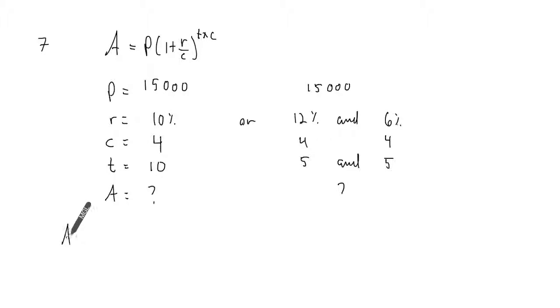For A here, my amount in the end will be 15,000 times 1 plus 0.10 over 4, compounded quarterly, to the power of 4 times 10, which is 40.